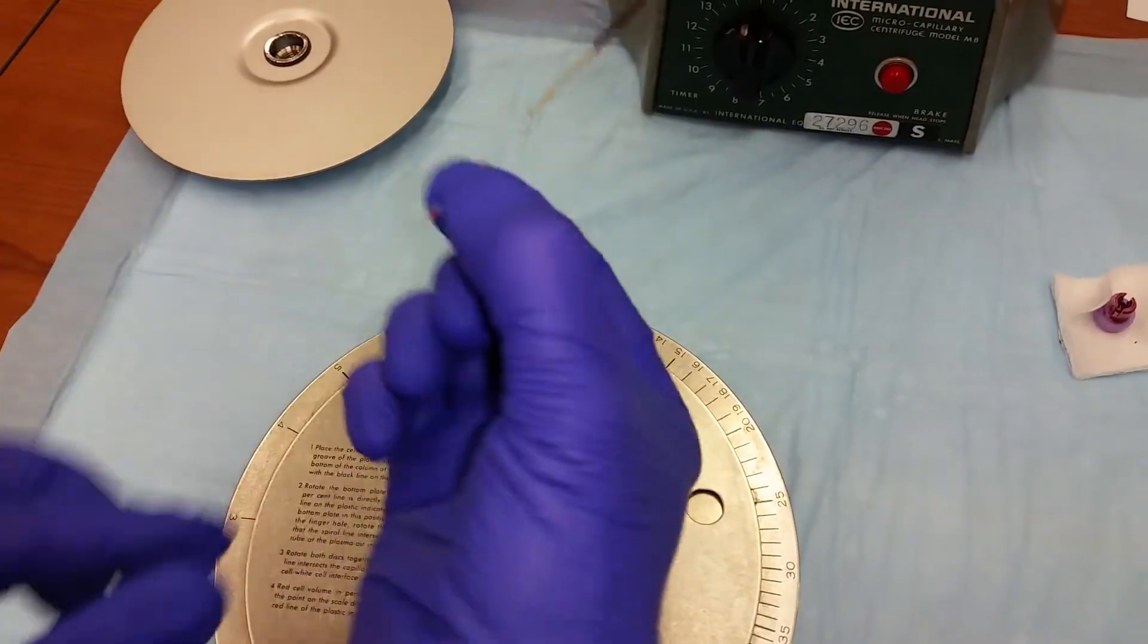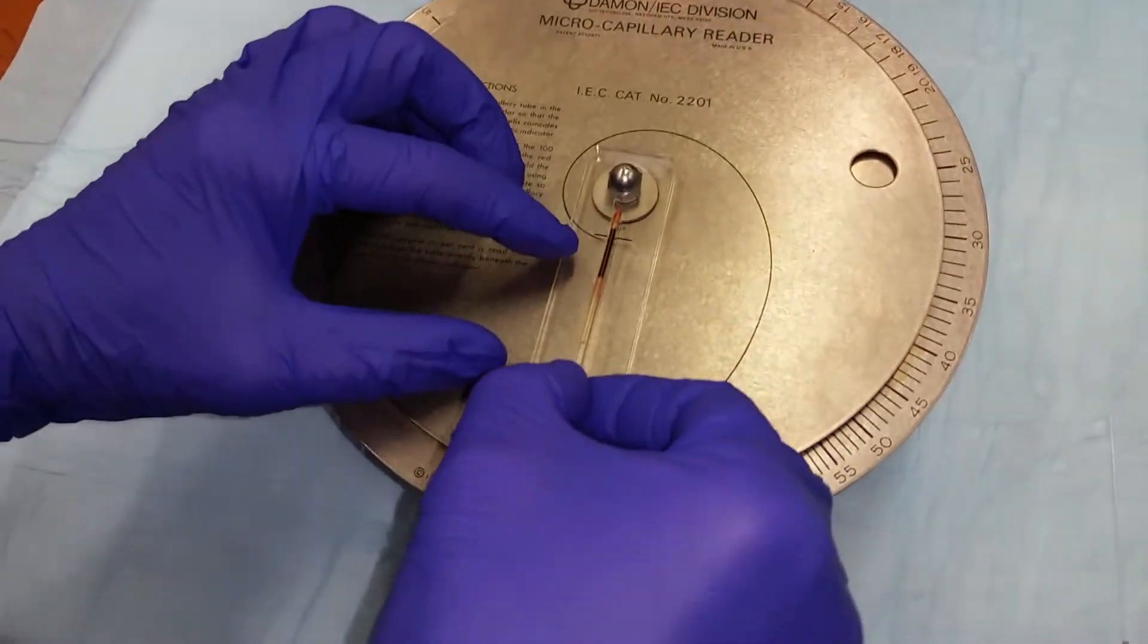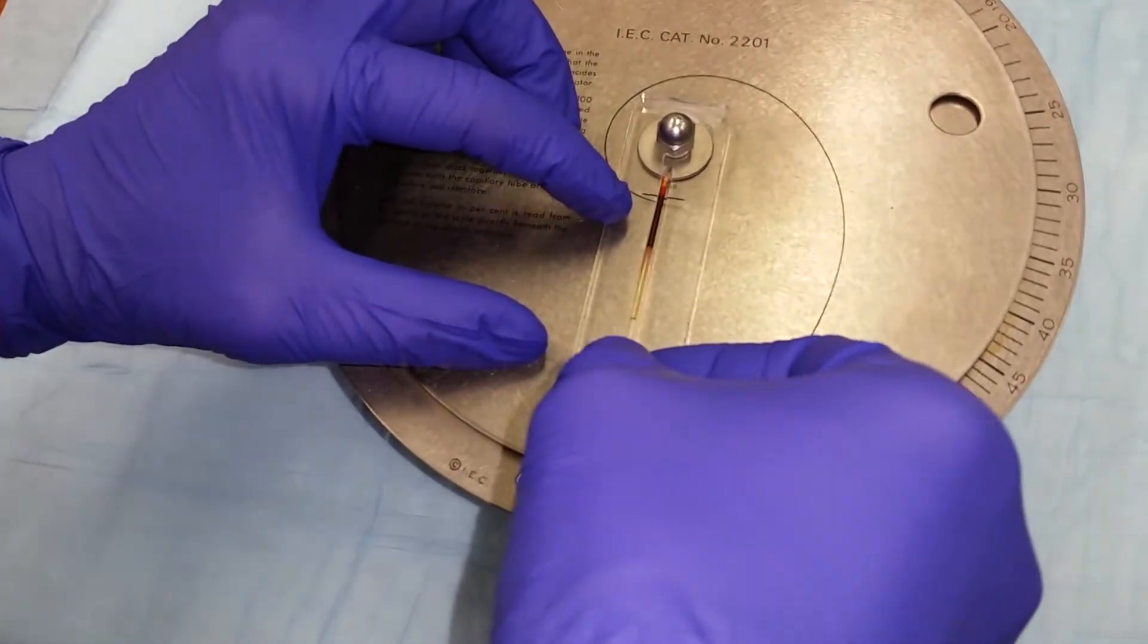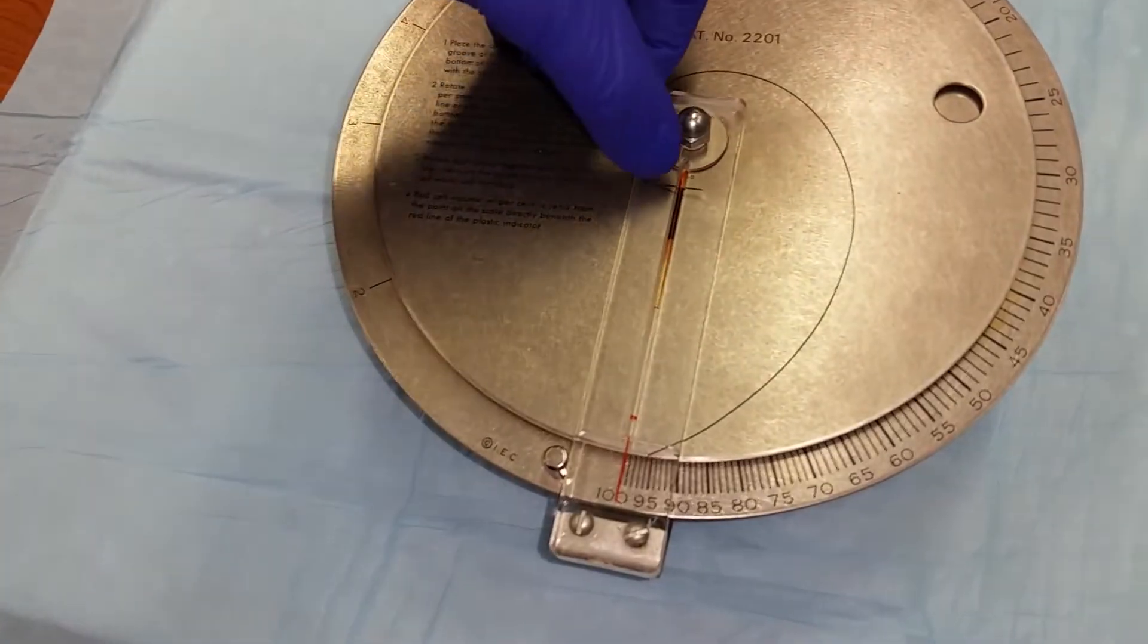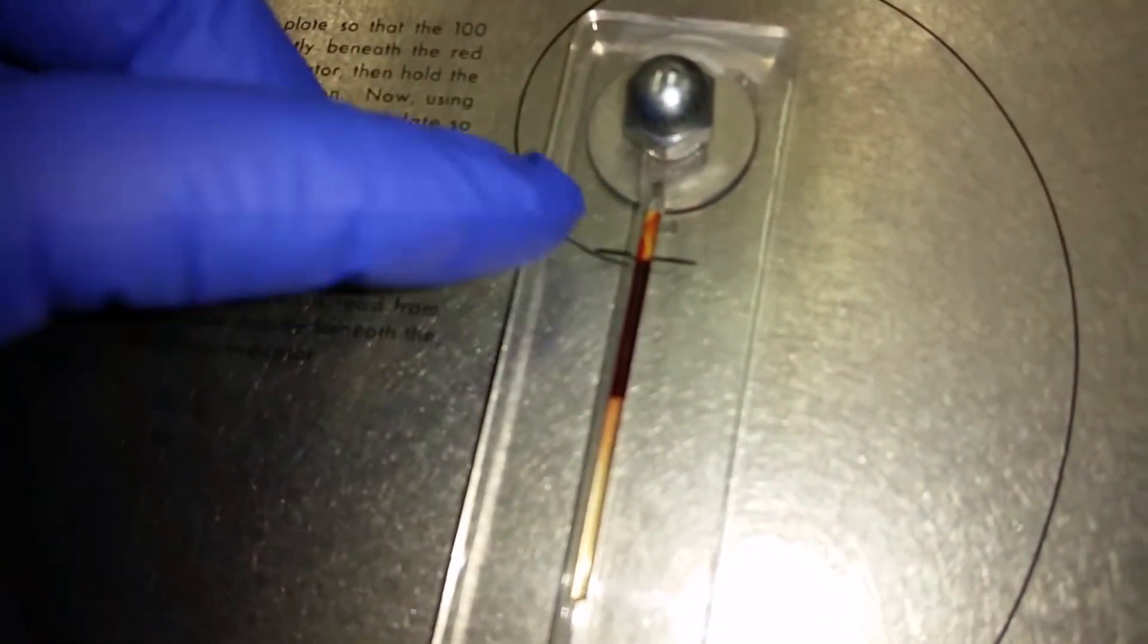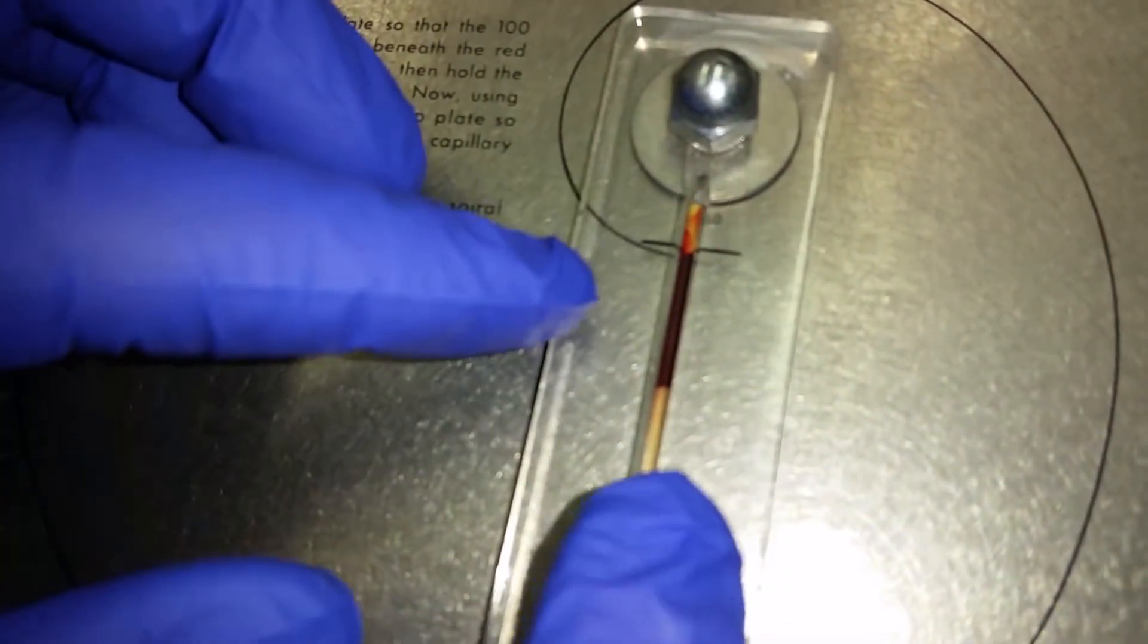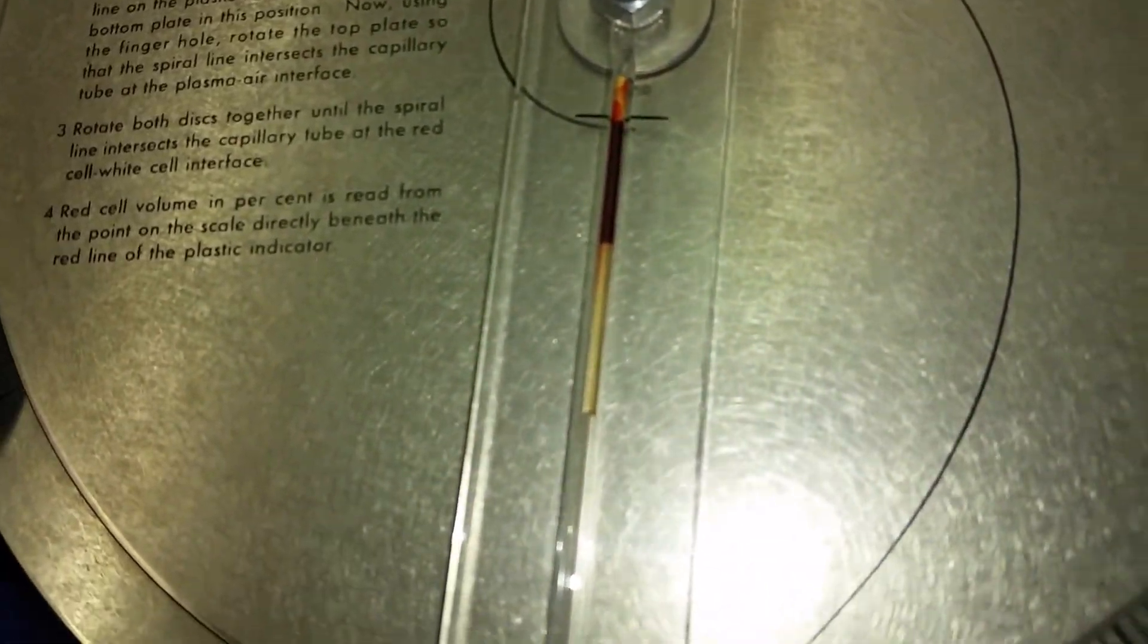Using this device, you're going to take your microcapillary tube and with the bottom of the tube, the bottom of the column of blood, touching the black line at the top of the instrument in this little plastic. This is the bottom of the column of blood here. Place the capillary tube in this little plastic.